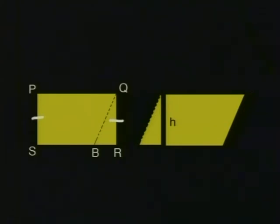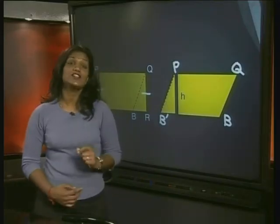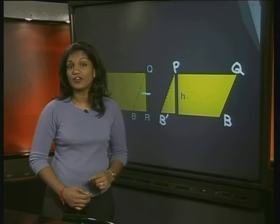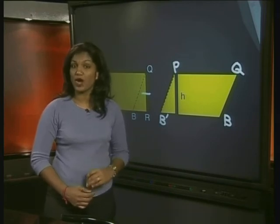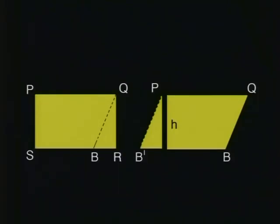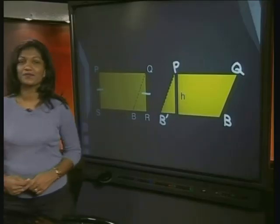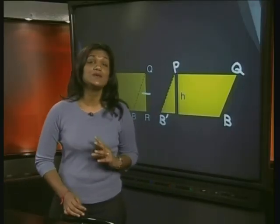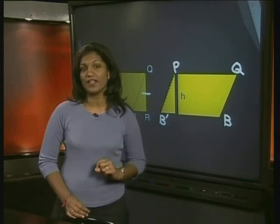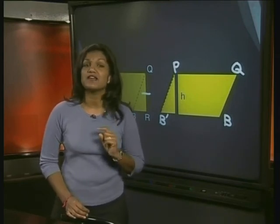Let's label our new diagram. We'll call it P, Q, B and B'. Let's look at our rectangle PQRS and parallelogram PQBB' together. Will they have the same area? Yes, of course they will. We know that we have used the same pieces that made up the rectangle to make up the parallelogram, so the areas must be the same.